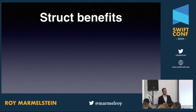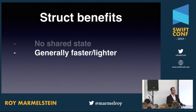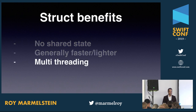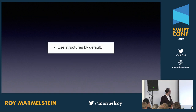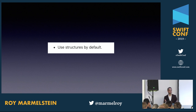But structs have a lot of benefits: no shared state because things get copied, they're generally faster and lighter because they're on the stack, and they're more thread-safe because of the copying mechanism. Apple, since Swift 4.2, tells us we should use structs by default — which is about as much of a best practice as you can get. But there are caveats and situations where we can't use structs.